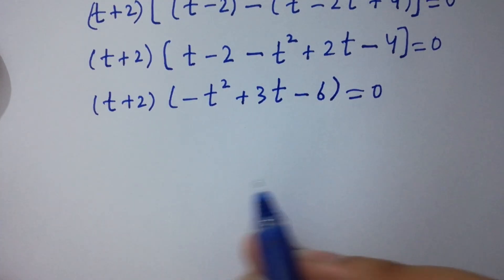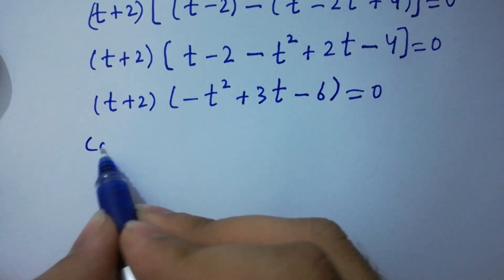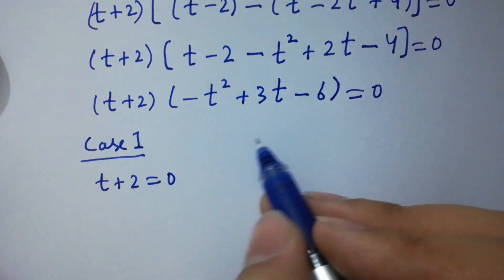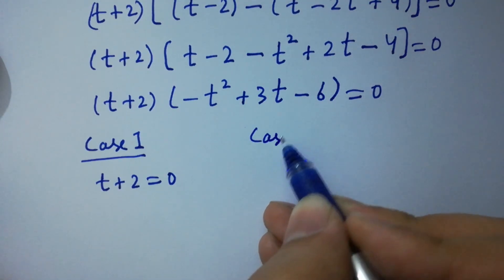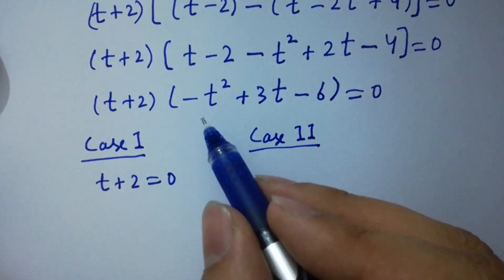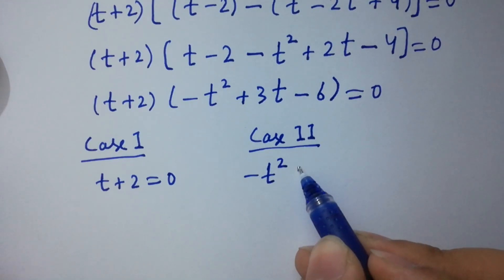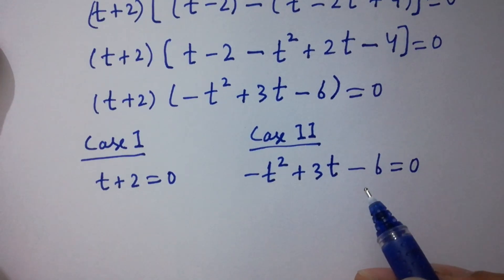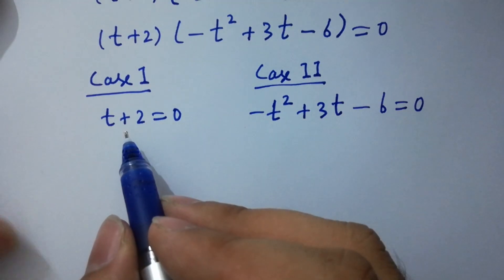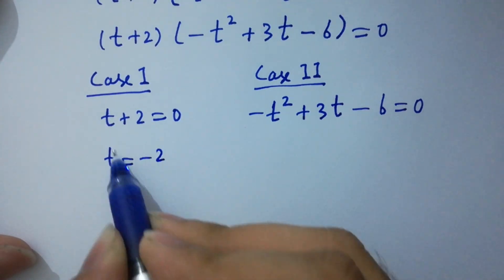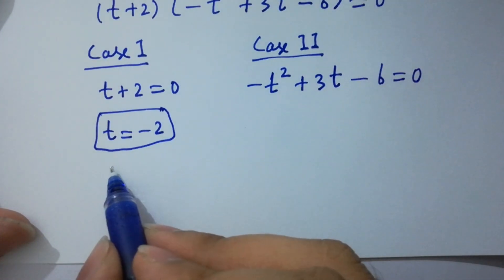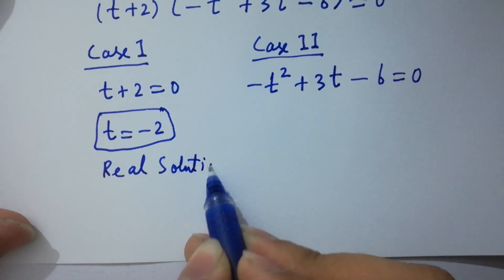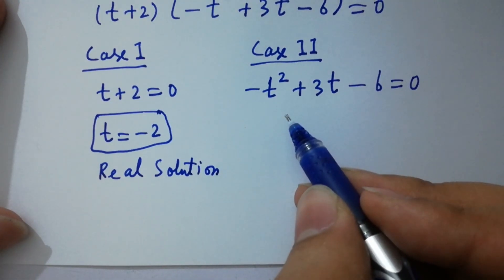So we have two cases here. Case 1: t plus 2 equals 0, and Case 2: minus t squared plus 3t minus 6 equals 0. From Case 1, t equals minus 2, which is our first real solution. Case 2 gives us a quadratic equation.